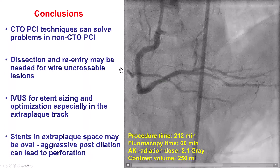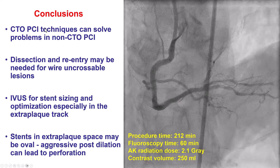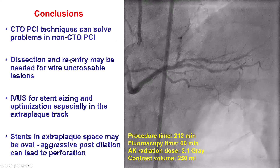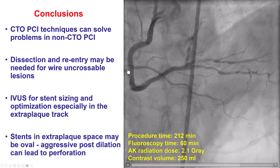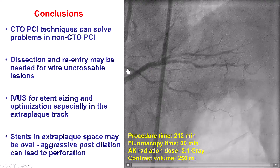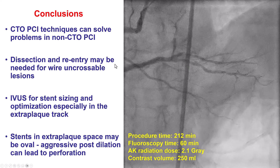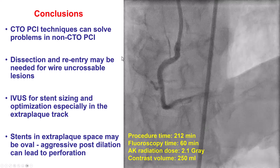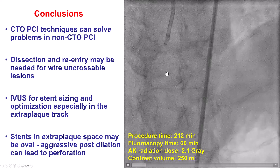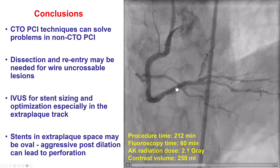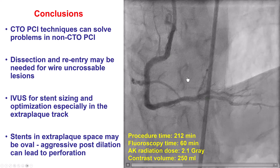Several lessons from this case. The first is that CTO-PCI techniques, namely subintimal re-entry, can be useful in non-CTO lesions. This was a high-grade but non-occlusive lesion in the mid-right coronary artery with heavy calcification that could not be crossed with a guide wire. Using subintimal re-entry, we were able to recanalize the lesion. By having a guide wire in the marginal branch at the proximal cap, we were able to maintain patency of that branch.